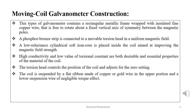High conductivity and low value of torsional constant are both desirable and essential properties of the material of the coil. The torsion head controls the position of the coil and adjusts for the zero setting. The coil is suspended by a flat ribbon made of copper or gold wire in the upper portion and a lower suspension wire of negligible torque effect.